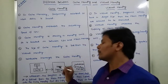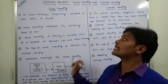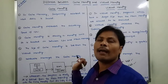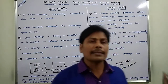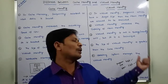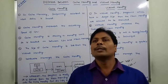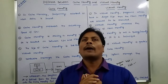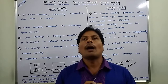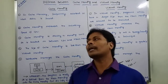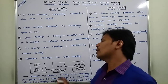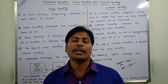The computer hardware manages the cache memory, whereas the operating system manages the virtual memory. To manage virtual memory, we use the operating system, and to manage cache memory, we use computer hardware.